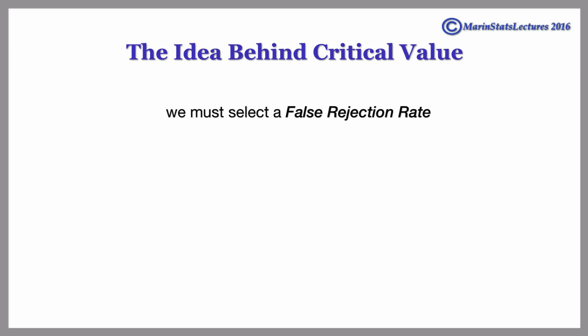We must select a false rejection rate. We call this the significance level. 5% is the most commonly used significance level, so let's use that.